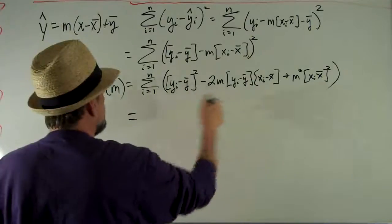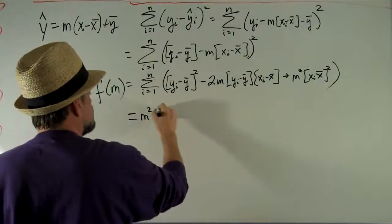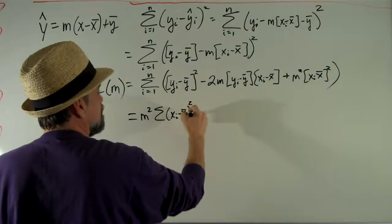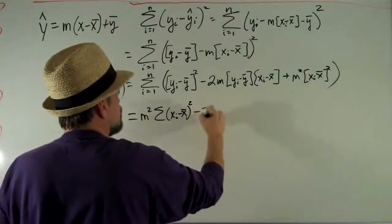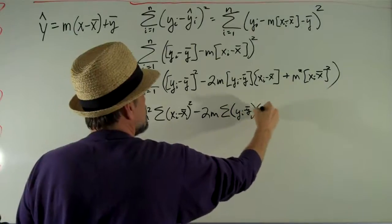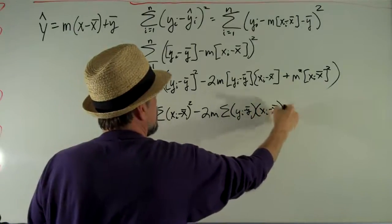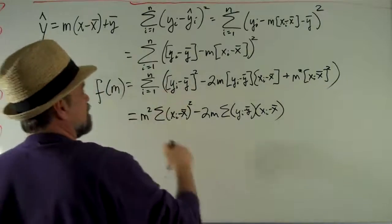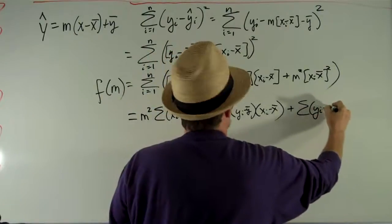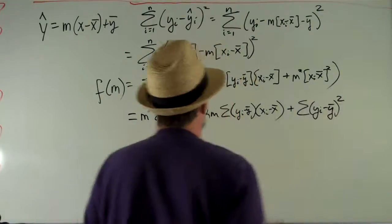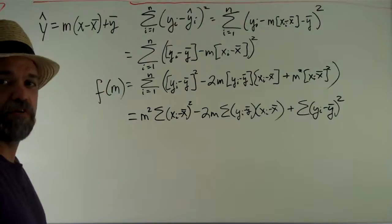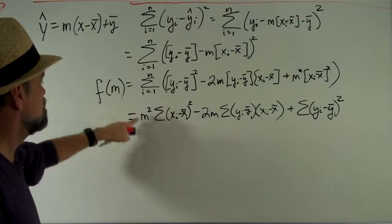This is m squared times the sum of my xi minus x-bars, minus 2m times the sum of yi minus y-bar times xi minus x-bar, plus the sum of yi minus y-bar squared. You might be able to see where I'm going already. This is a quadratic function where our variable is m.